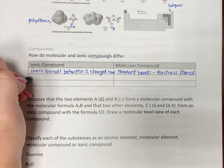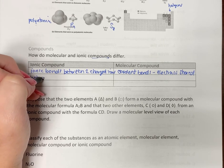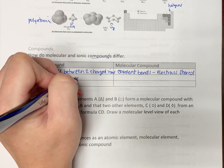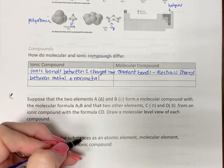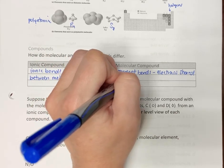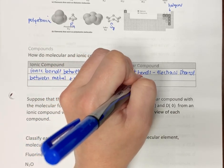Ionic compounds are always, no exceptions, between a metal and a nonmetal. Molecular compounds are going to be between two nonmetals.